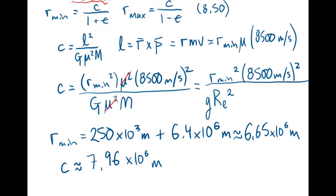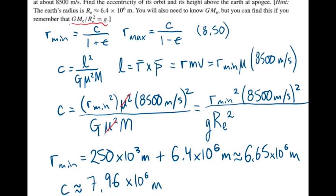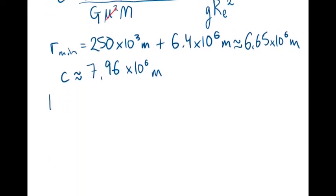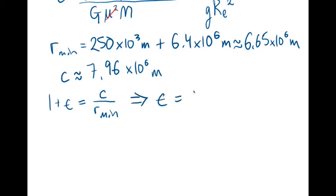Then let's look back at equation 8.50. The minimum radius equals C over 1 plus the eccentricity. Solving for the eccentricity, that means 1 plus E equals C over r_min. We have both of those numbers, which yields the eccentricity equals 0.197.